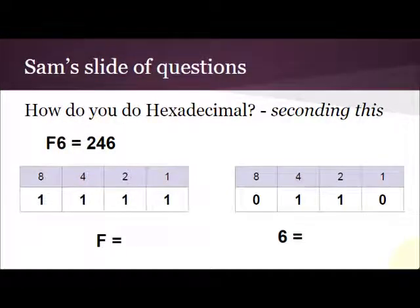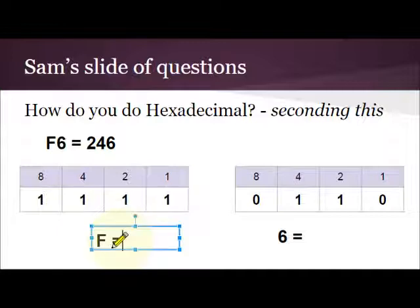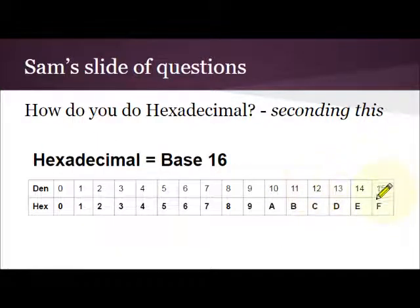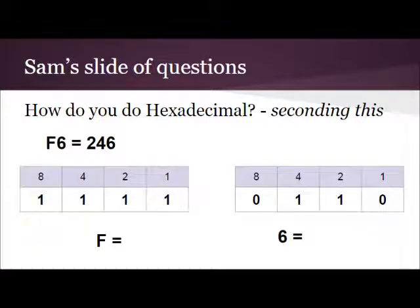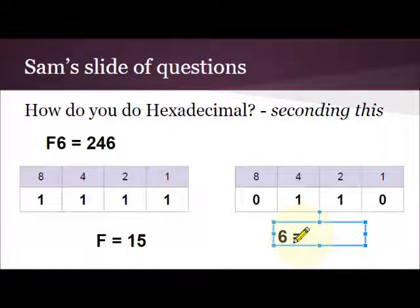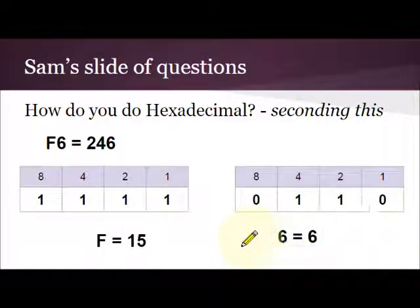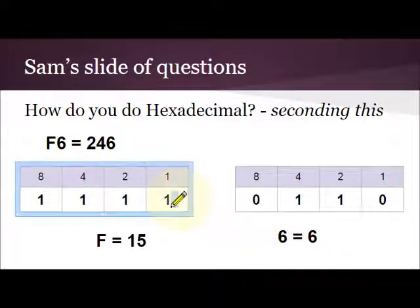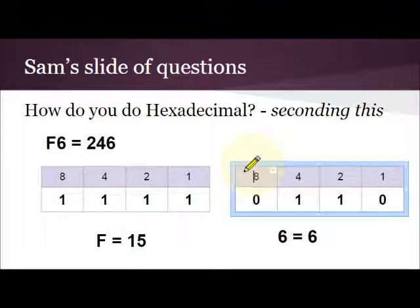So what if I wanted to go the other way? If I told you that F6 is actually 246 in denary, how would I know that? Well, what I can do is I can still use my nibbles. I can say F — well, looking at my number system, F is 15. So 15 is 8 plus 4 plus 2 plus 1, so I need to have all the 1s in there. 6 — well, 6 is still 6, so I can work that one out: 4 plus 2. I put 1s under those and 0s under everything else because I don't use them. And then I take my two nibbles and put them together.